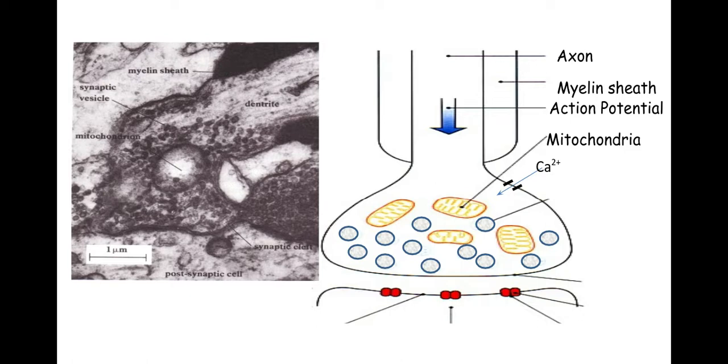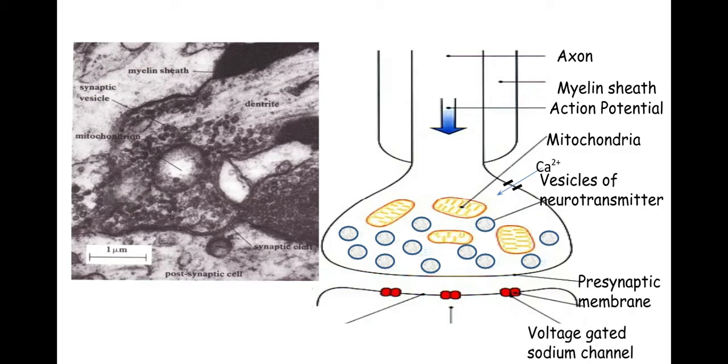We also have mitochondria which generate ATP using aerobic respiration. This is needed for two things: to move vesicles to the presynaptic membrane using the cytoskeleton, and to create the enzyme acetylcholinesterase. We have vesicles of neurotransmitter, and the neurotransmitter we're most familiar with is acetylcholine. We have the presynaptic membrane, the voltage-gated sodium channels on the postsynaptic membrane, the postsynaptic membrane itself, and in between those two we have the synaptic cleft.